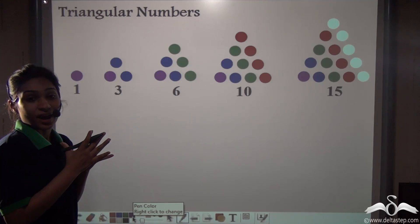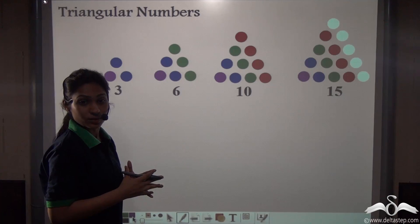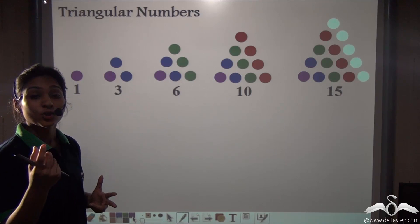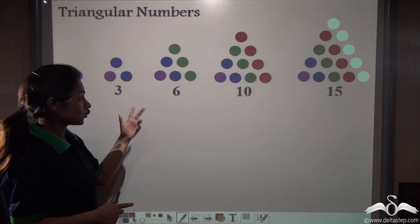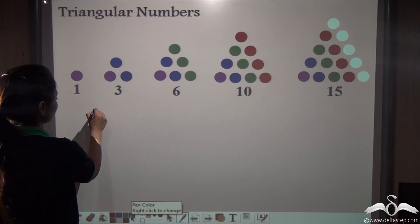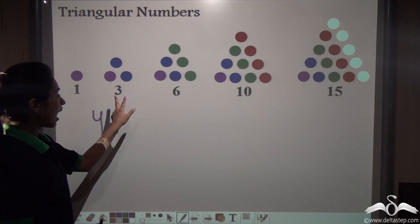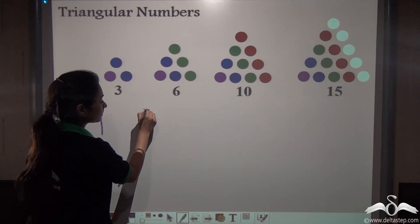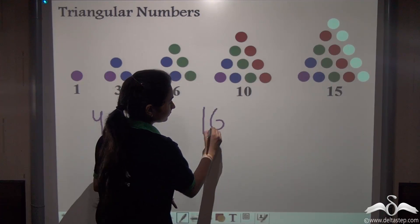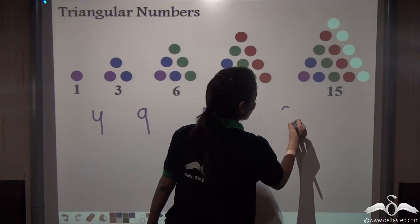Well, there is a very interesting fact about these triangular numbers. If you add any two consecutive triangular numbers, you will get a perfect square. Check out. Adding six and ten, sixteen. Adding ten and fifteen, twenty-five.